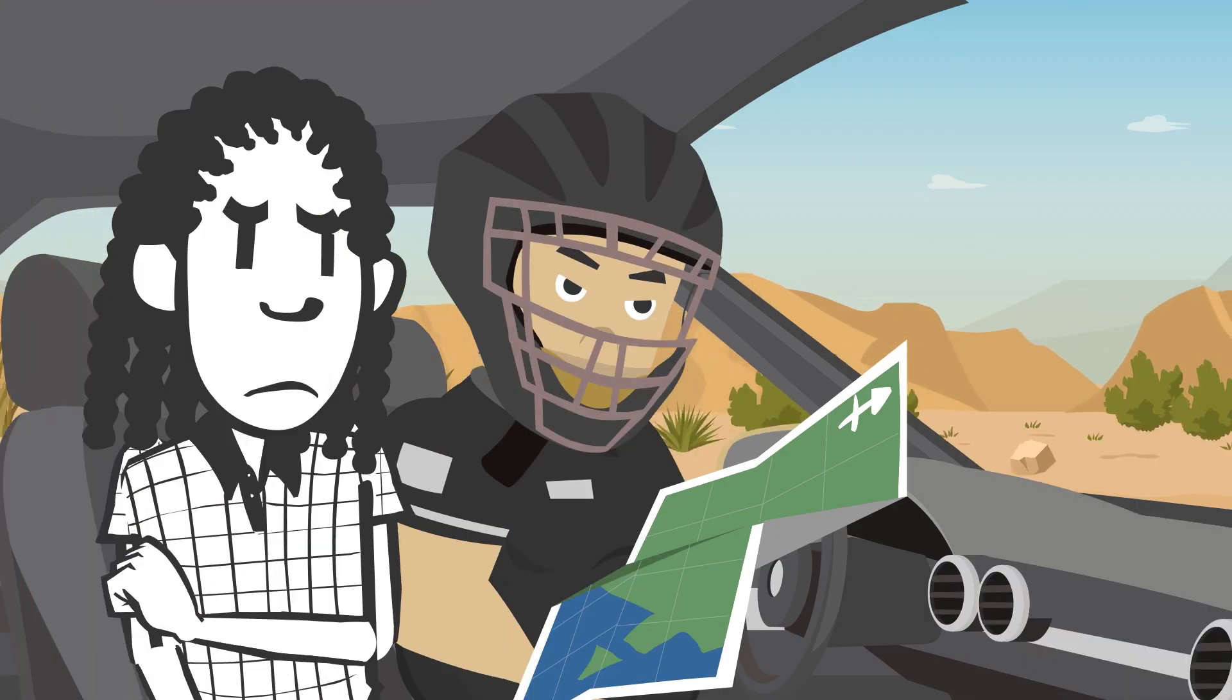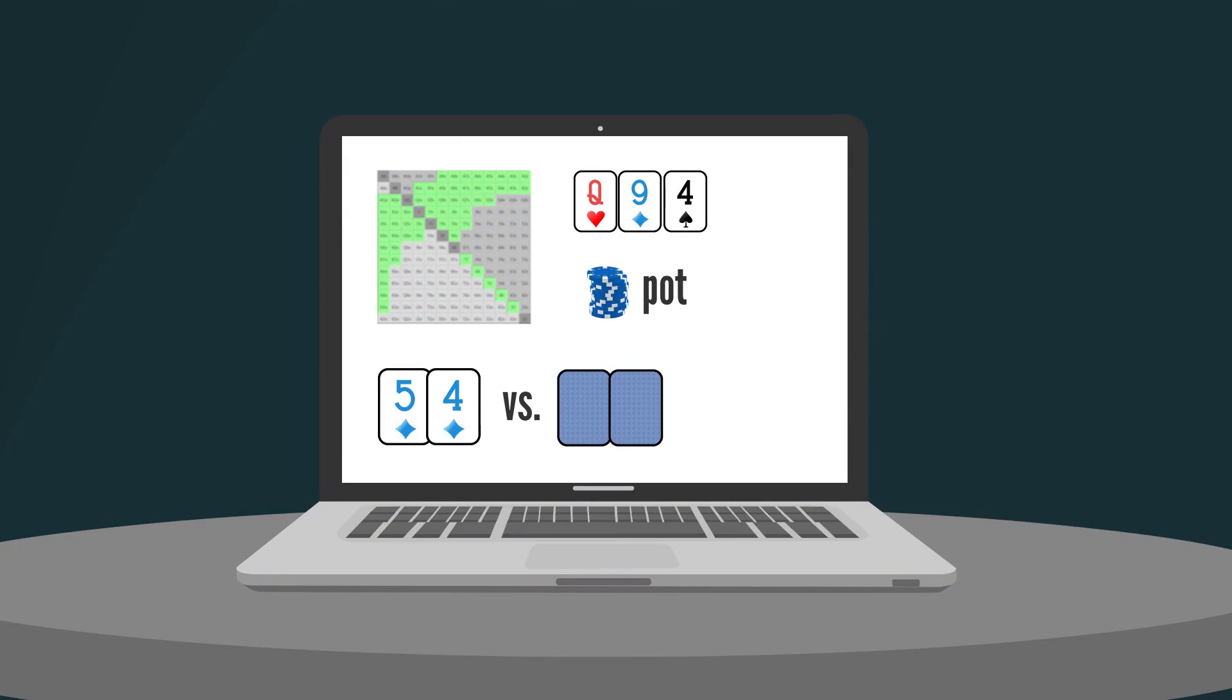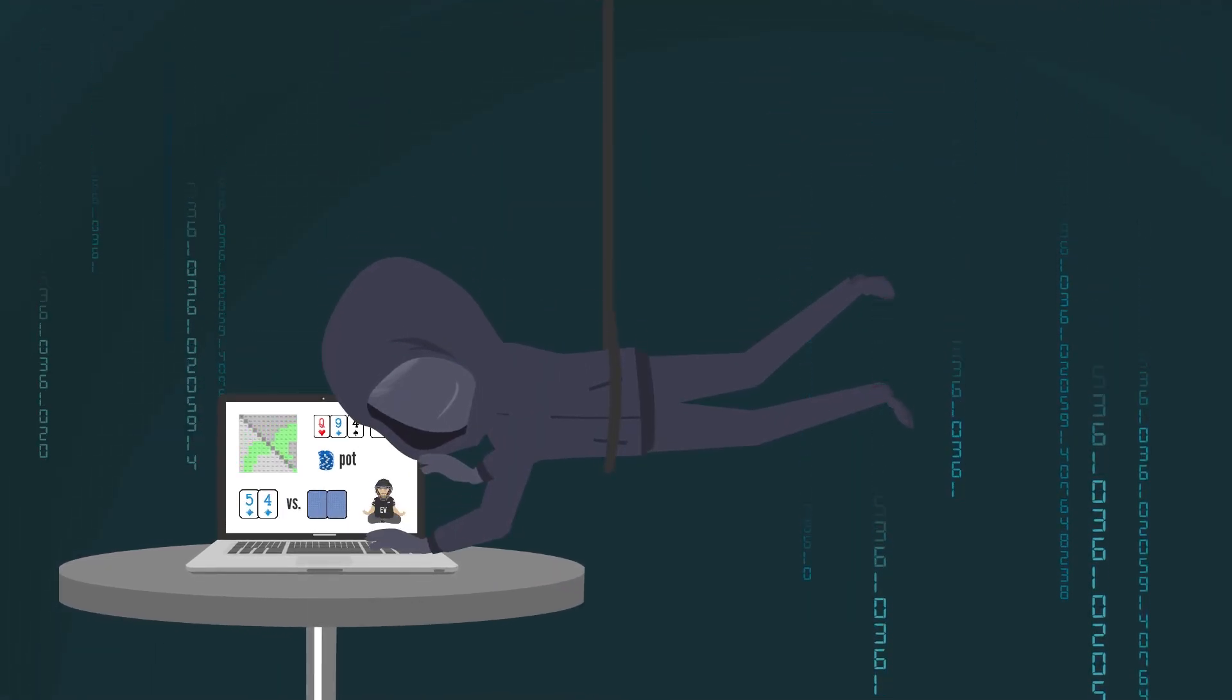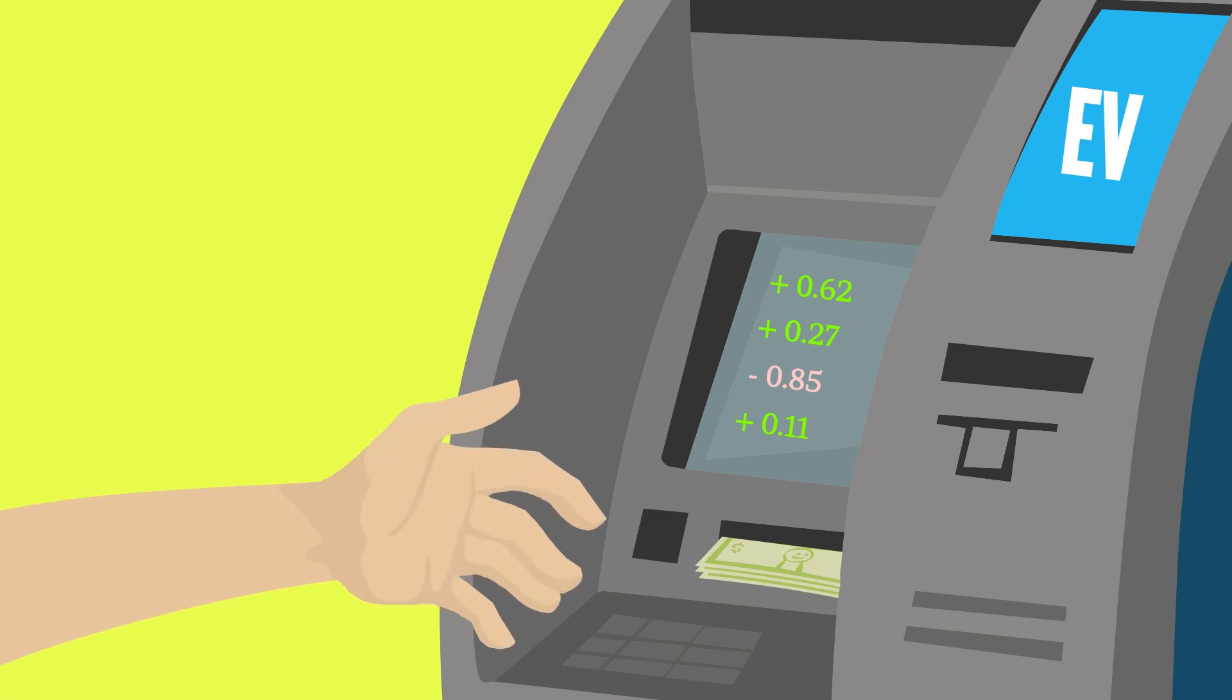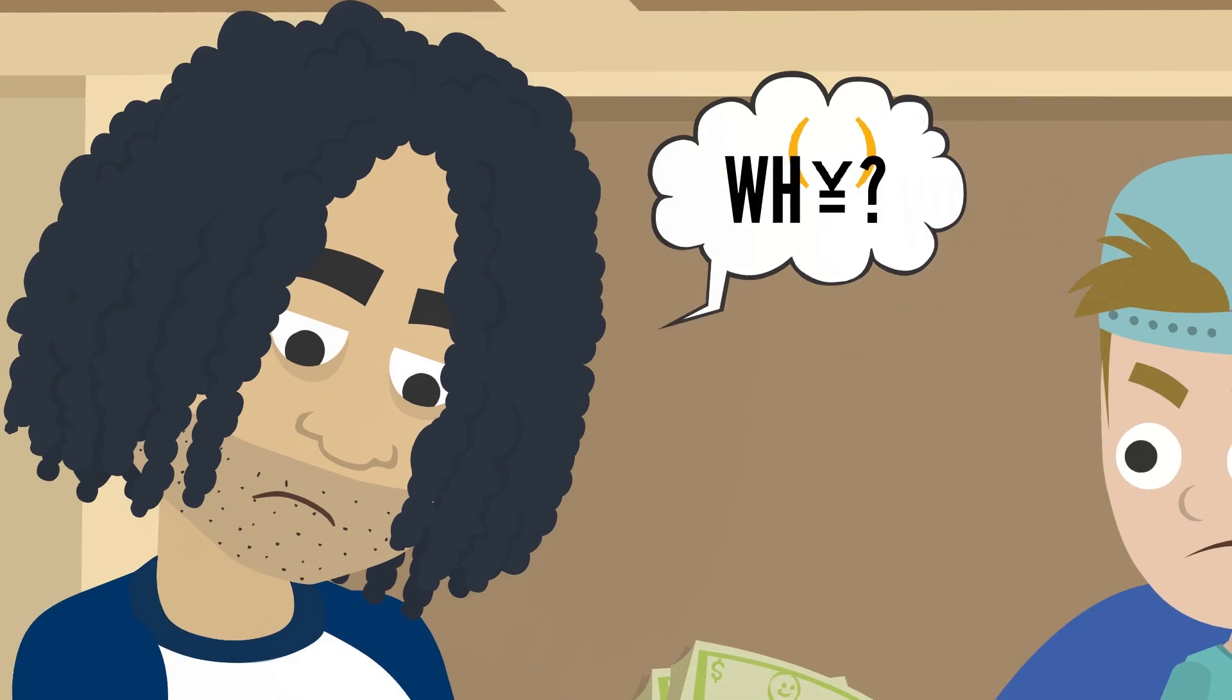EV is still the driving force behind our decisions, but given these narrow margins, the route it is taking us is less clear. We can use technology such as solvers to calculate the EV of complex strategies with multiple streets left, but even the solvers require input from us in order to perform the calculations. Determining where our EV gains and losses are coming from is the essence of getting better at poker.